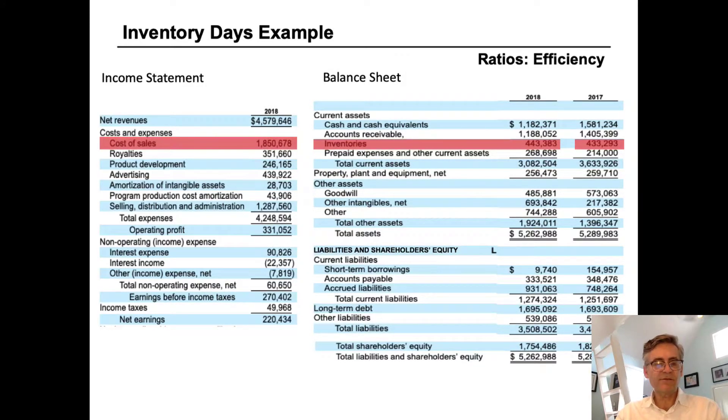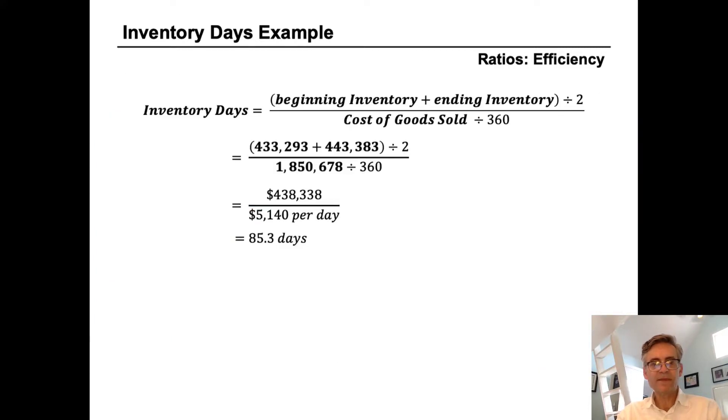So we can use these three numbers to plug into our formula. So the formula is beginning inventory plus ending divided by two. And we saw that was $433 million plus $443 million. We'll divide that through by two and we get to an average inventory of $438 million.